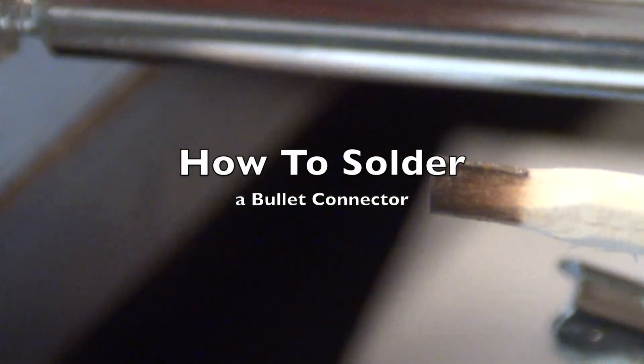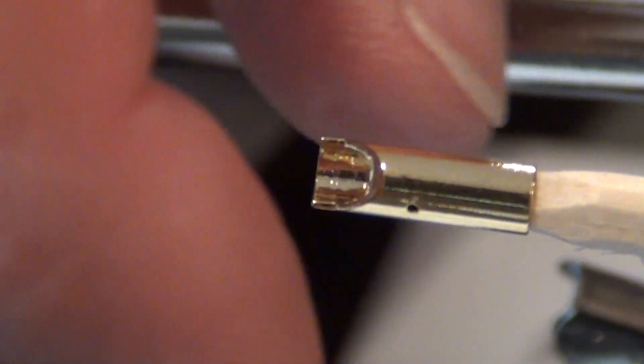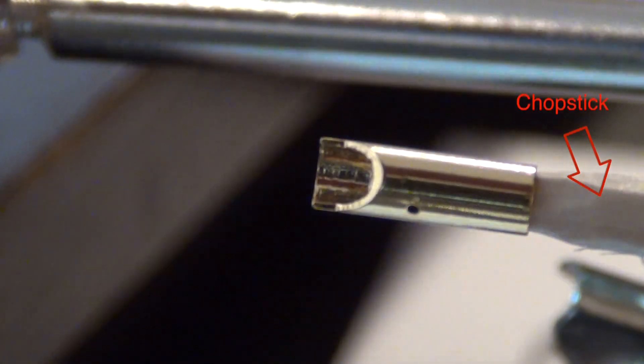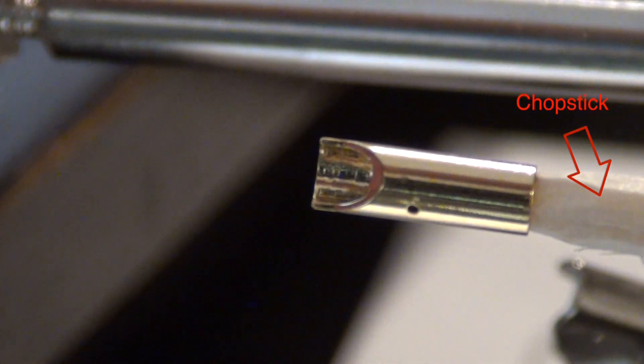Okay, so I'm showing how to solder those bullet connectors. First of all, I use a chopstick from the Chinese place and make it fit so that the connector fits over there.